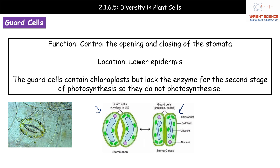When looking at a light microscope image, we can pick out the guard cells — and the central point between them is the stomata. Make sure you can identify guard cells from light microscope images; they are quite obvious and look like a pair of green lips, so you should be able to pick them out quite easily.